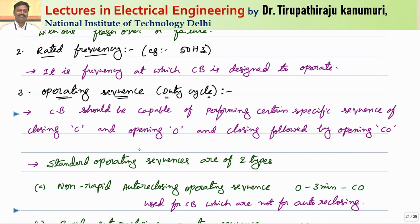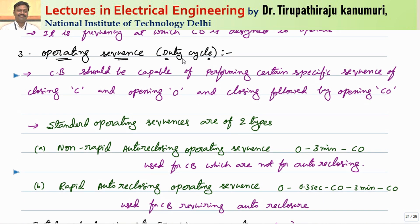The rated frequency is the frequency for which the circuit breaker is designed to operate. For example, a circuit breaker designed for 60 Hz cannot operate under 50 Hz without modifications, because some design conditions are specific to the operating frequency.